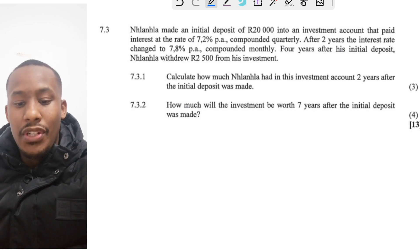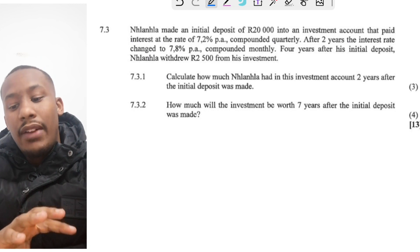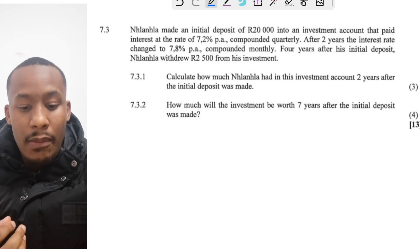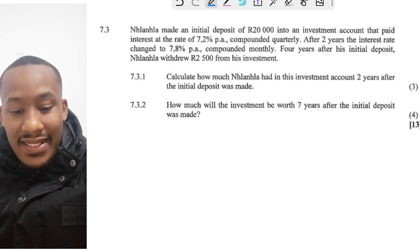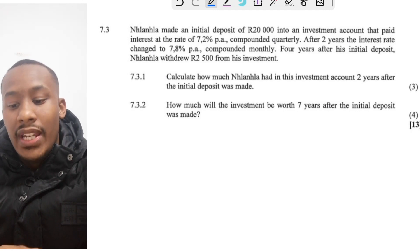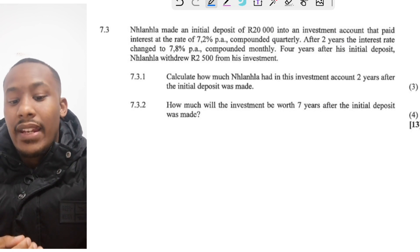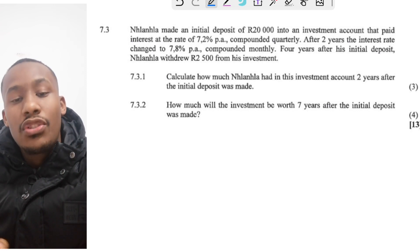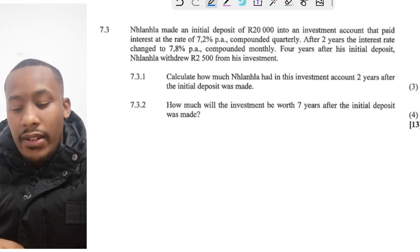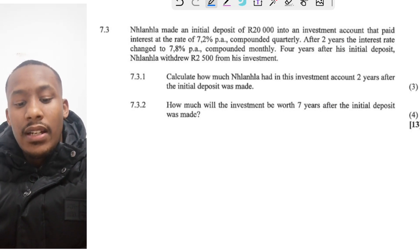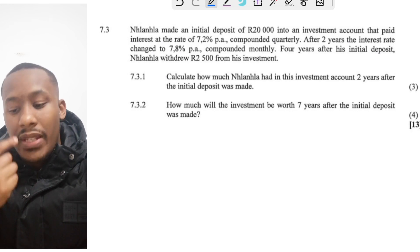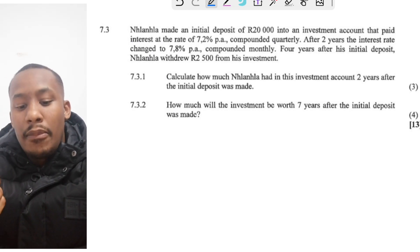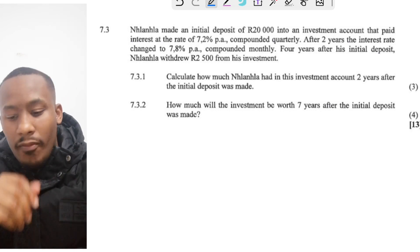Moving on to our last question over here. This one is going to be a bit more complicated because now you have to construct a timeline in order to answer this one. So let's read through it quickly. I'm going to struggle to pronounce his name, so I'm rather going to say Mr. N. Mr. N made an initial deposit of $20,000 into an investment account that paid interest at a rate of 7.2% per annum compounded quarterly. After 2 years, the interest rate changed to 7.8% per annum compounded monthly this time. So 4 years after his initial deposit, Mr. N also withdrew $2,500 from his investment. So there's a couple of things that happens. There's an initial deposit, then there's a change in interest rate two years later, and then four years later he makes a withdrawal.